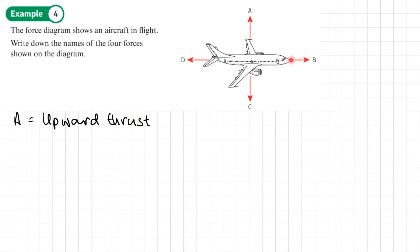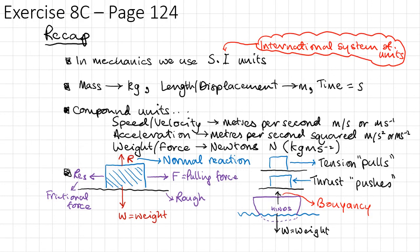B is going to be the force that's pushing the aircraft forward. So B would be a forward thrust. There's no tension. Nothing's pulling it. It's being pushed forward by its own engines, by its own propulsion. C, well, that will be the weight of the plane. And then D, this force trying to stop it from moving, is going to be air resistance. So you should now be able to do exercise 8C on page 124 of the textbook.